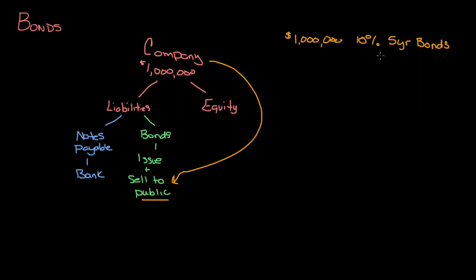You might say, hey, 10% sounds great, especially with today's interest rates. But you have to look at what the market rate is. This 10% is called the contract rate — it's also called the face rate. This is the rate that they're going to pay in interest on the bonds.